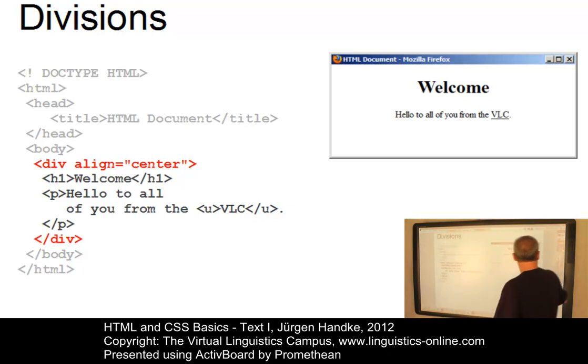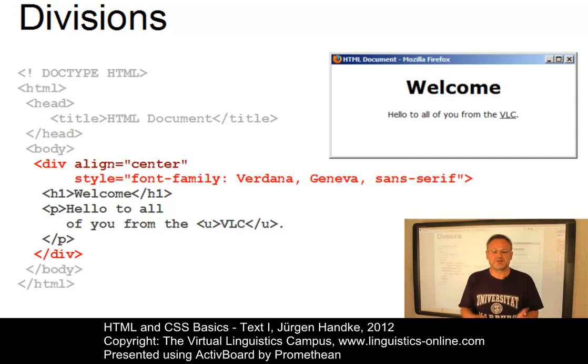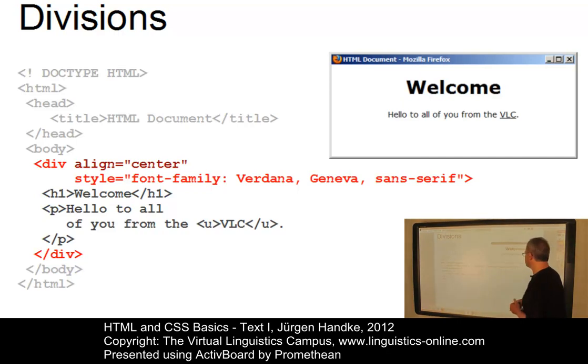In the second example, we have added a second attribute. Now, in addition to the align attribute, we have added the style attribute with which we can define, for example, the font type. And as you can see here, now we have defined the font family Verdana and the result is clearly visible. Now, the text is not only centered, but it also is displayed in the Verdana font.